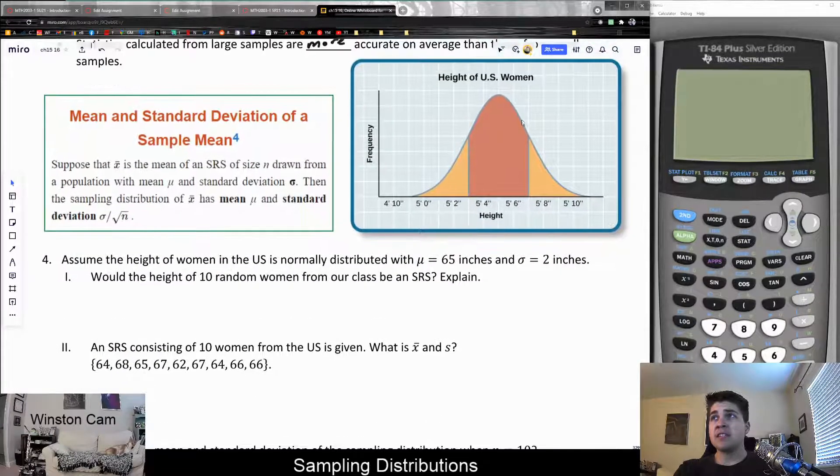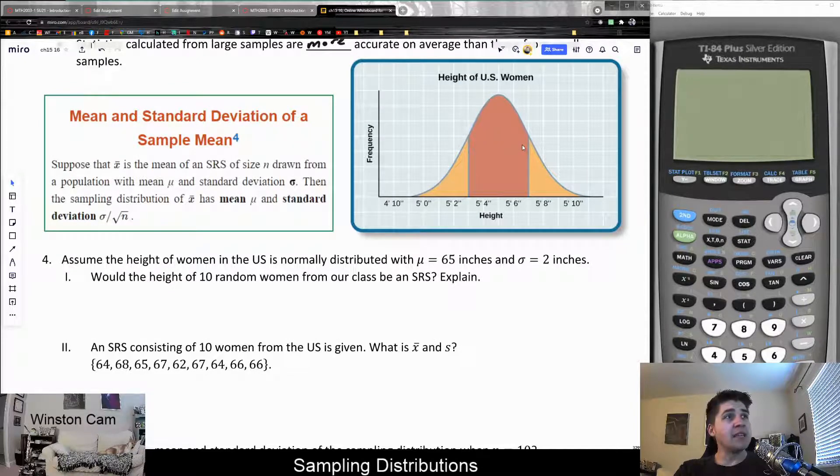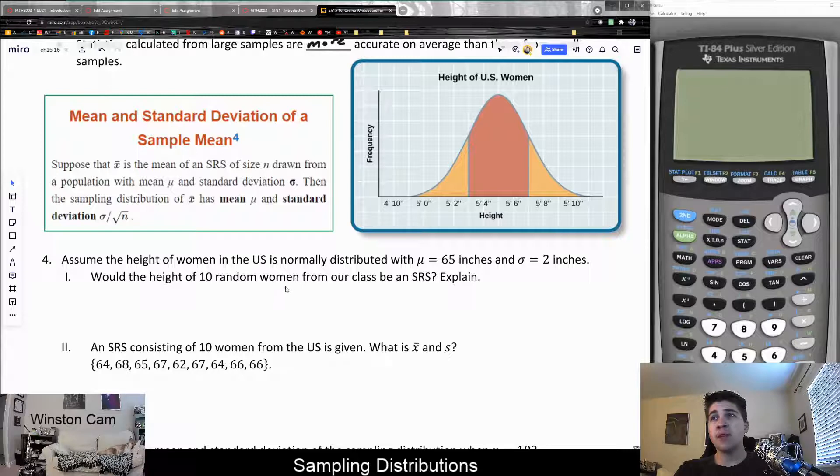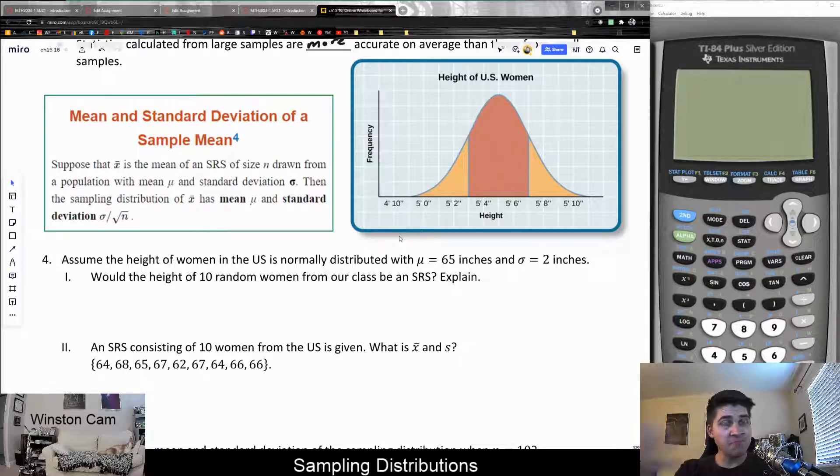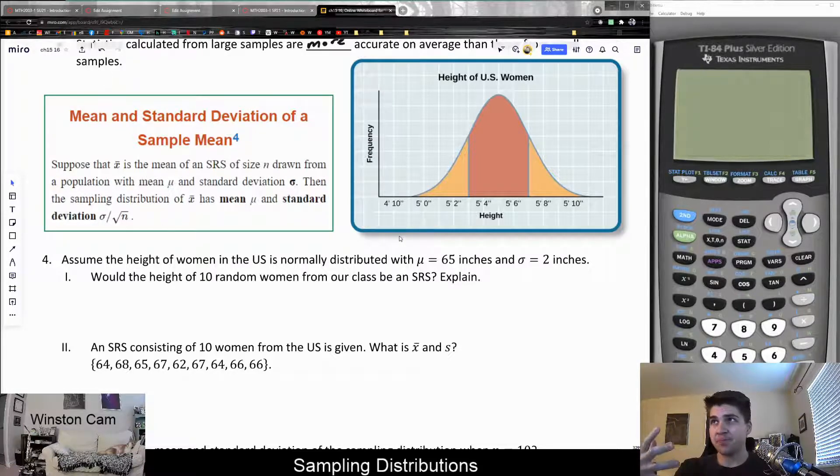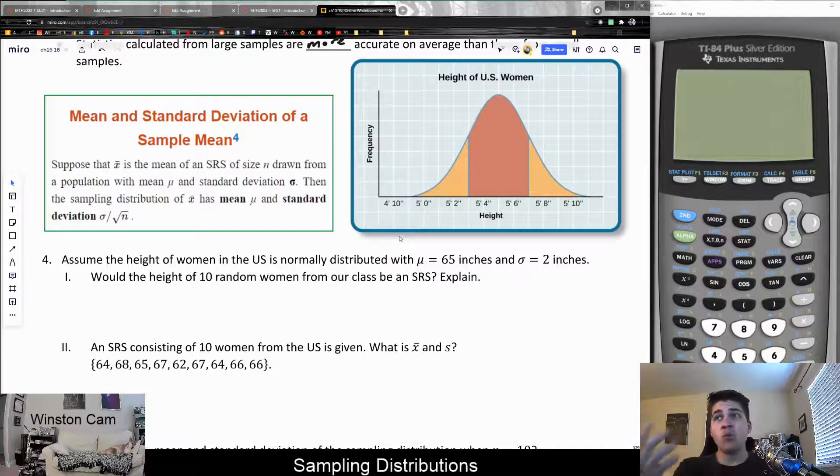So if this is the distribution of height of women in the United States, it says, would the height of 10 random women from our class be an SRS? So let's say I took our particular stats class this summer and I asked the 10 women in our class, which are approximately 10 of you, what is your height and use that as an average. I didn't collect this data, I could have.